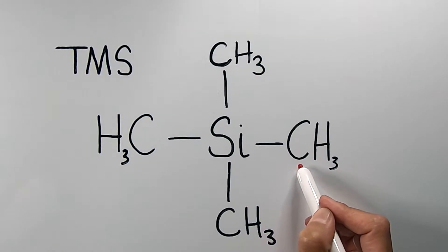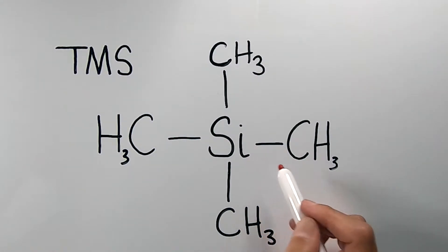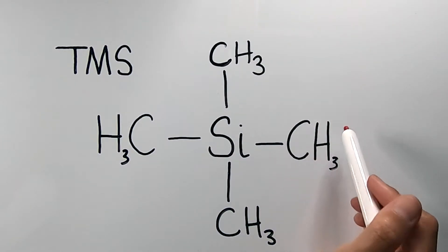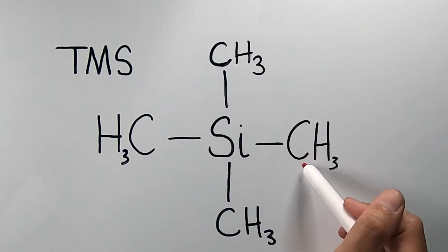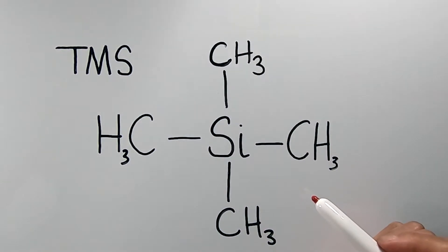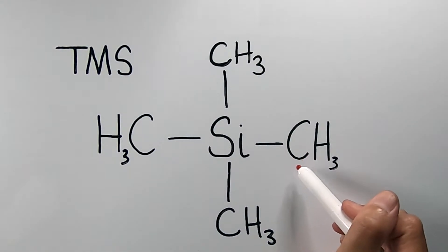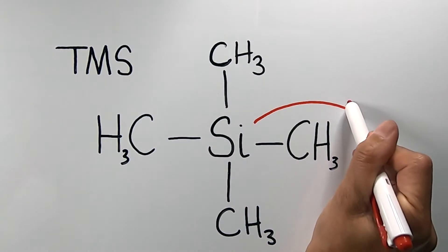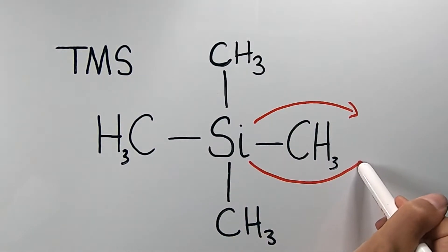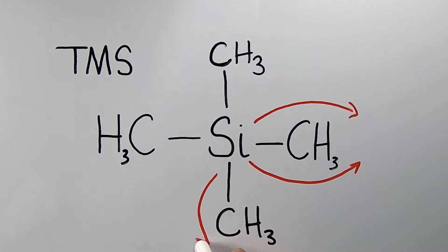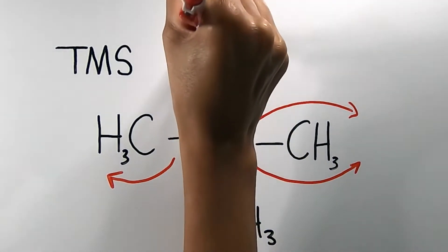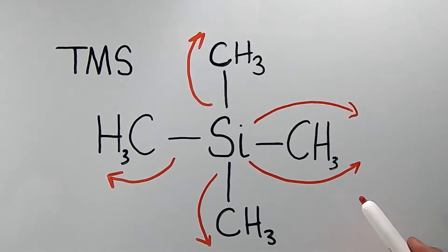Carbon is more electronegative than silicon. This means that carbon will have a greater attractive pull on electrons — electrons are more attracted to carbon than silicon. So what will happen is the carbon atom will withdraw electron cloud density from the silicon atom, and the same will happen on the other four methyl groups. What does this imply for hydrogen and HNMR?